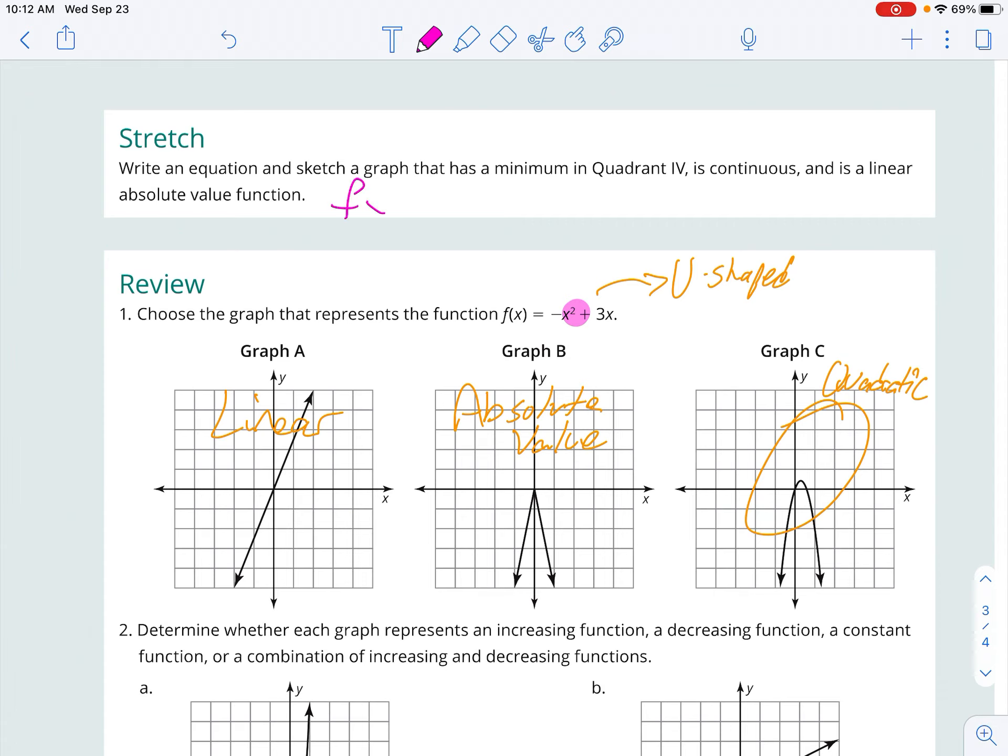So to create that graph, I'm just going to create something, and I'm going to go plug it into my calculator to see if it matches up. But it's got to be an absolute value. So I'm going to do, say, maybe absolute value of x minus 1. Let's just go see what that does.